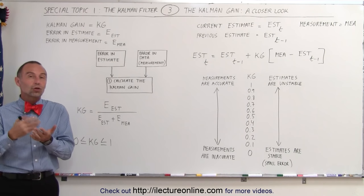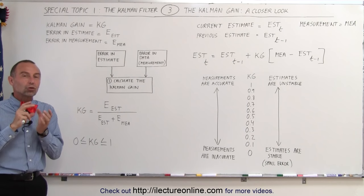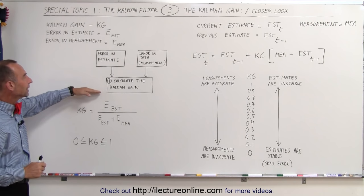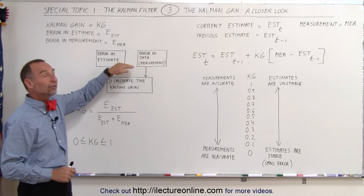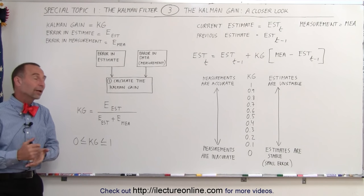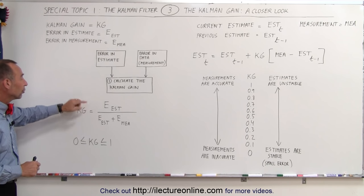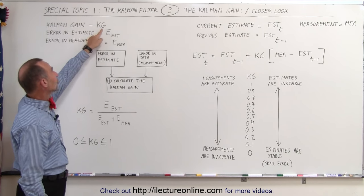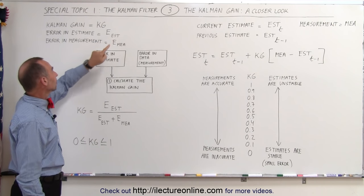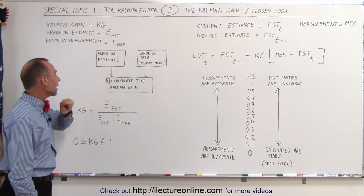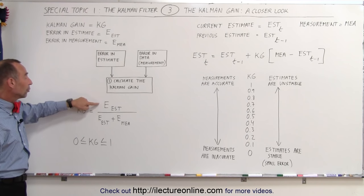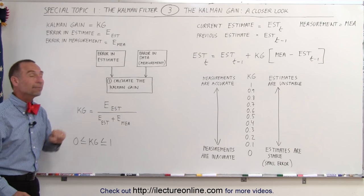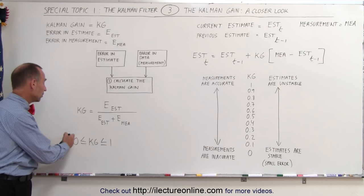The Kalman gain is what's used to determine how much of the new measurements to use to update the new estimate. What goes into the Kalman gain is the error in the estimate and the error in the data — the observation of the data that we took. The Kalman gain KG is equal to the ratio of the error in the estimate E_EST divided by the sum of the error in the estimate plus the error in the measurement E_MEA. The number you get will be somewhere between 0 and 1.